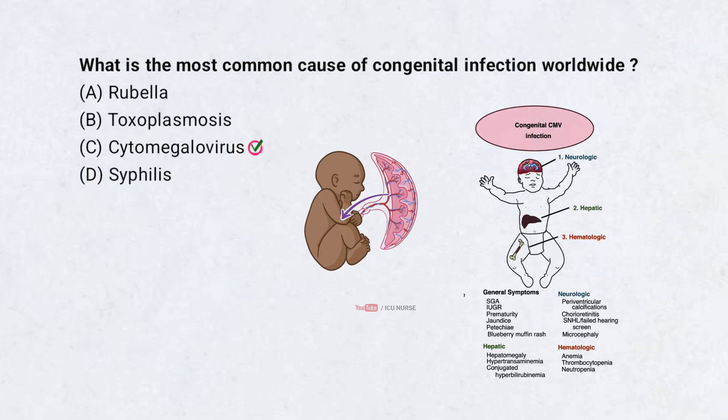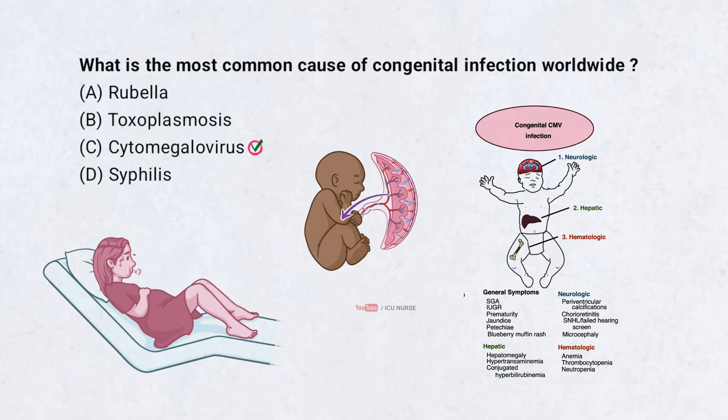CMV is the most common congenital infection globally. Most babies have no symptoms at birth, but some may develop hearing loss or developmental delays later. It spreads from mother to baby during pregnancy. Early diagnosis and monitoring help manage complications.